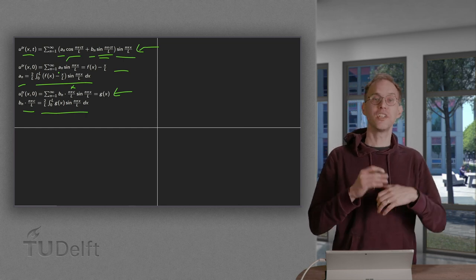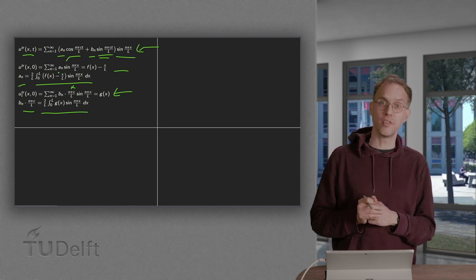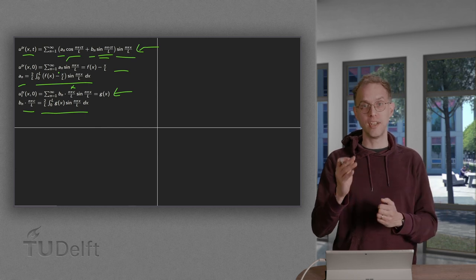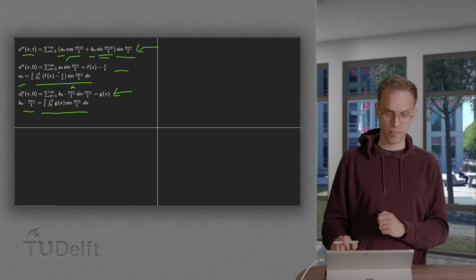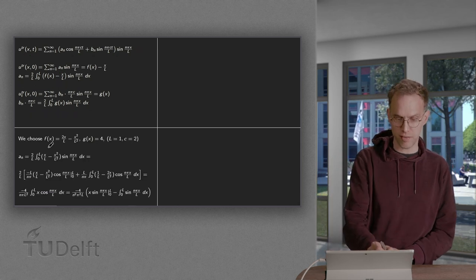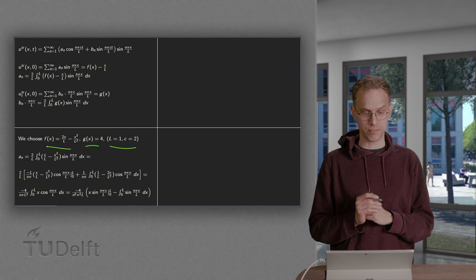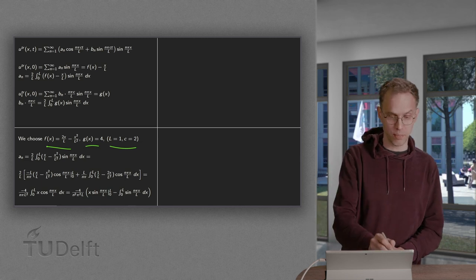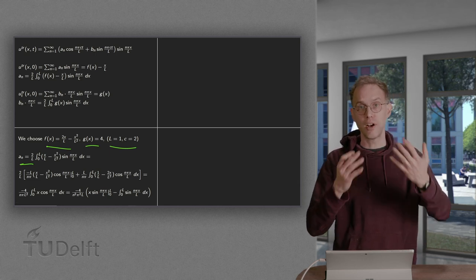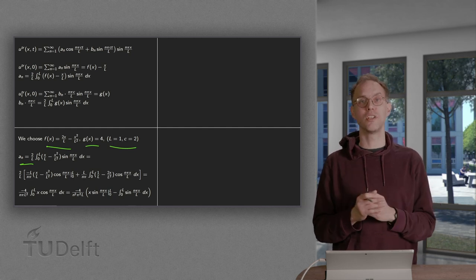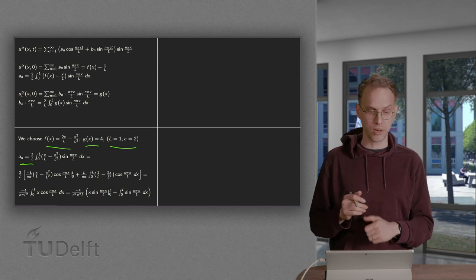To make some plots, we have to specify our parameters c and l, and of course our initial conditions f(x) and g(x). We make specific choices for f(x) and g(x) and for the parameters. With these choices, we can compute the an from that integral, and we compute the bn, which are a bit easier.